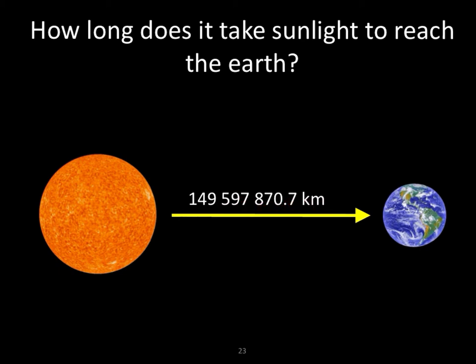We call this distance 1 astronomical unit, or 1 AU. Since the speed of light is 3×10^8 meters per second, we can convert this to kilometers per second, which becomes 3×10^5 km/s.